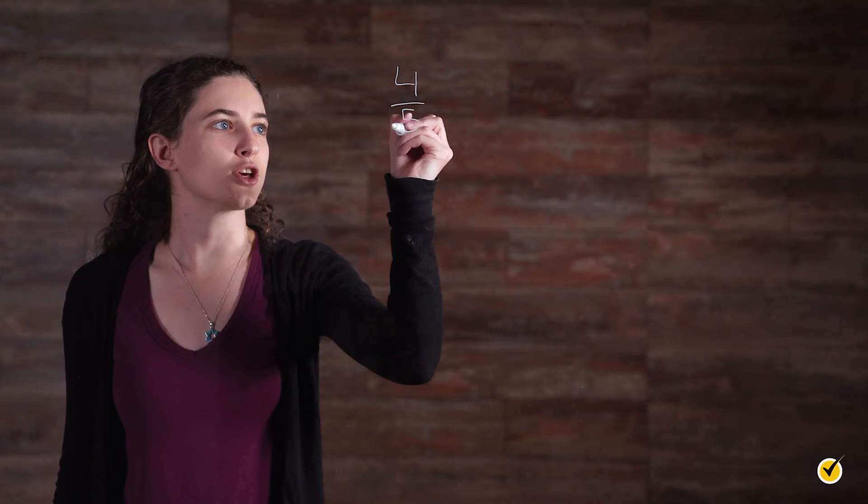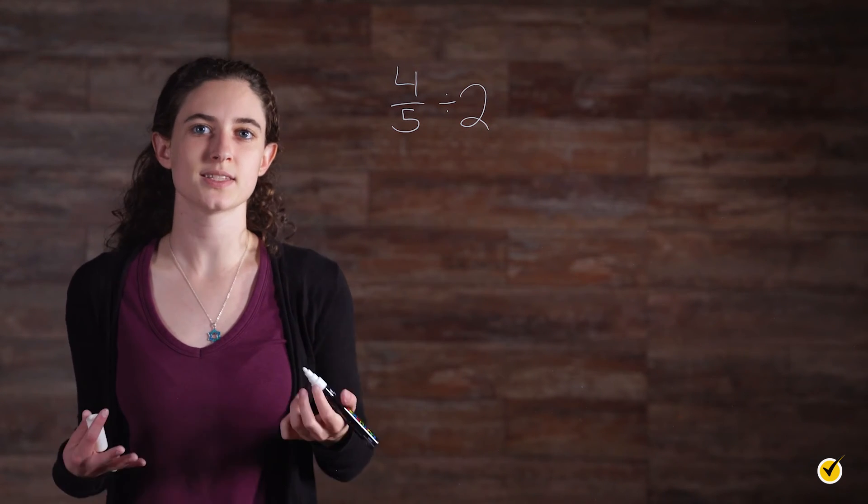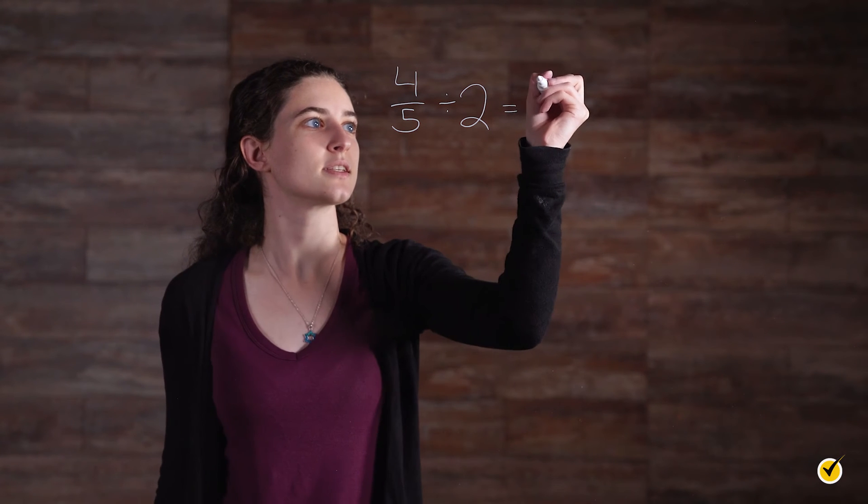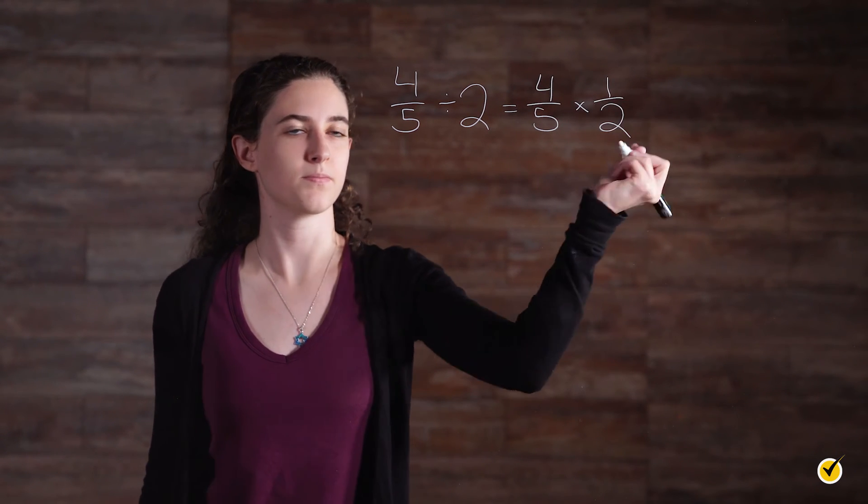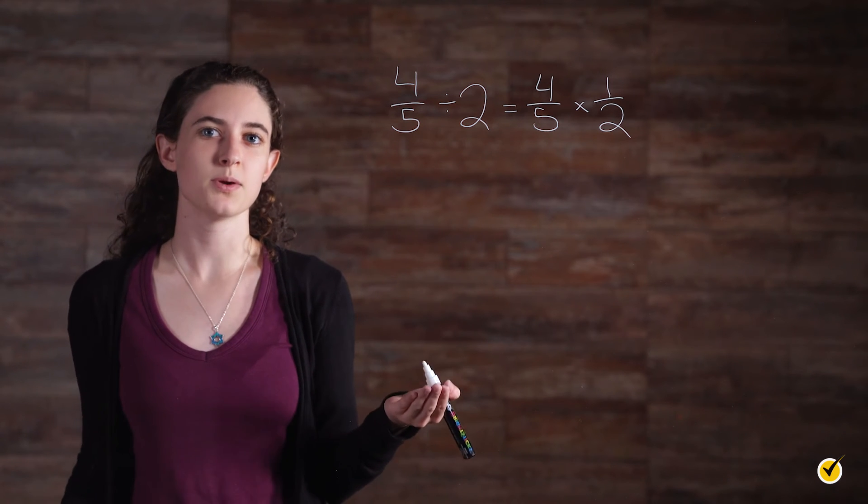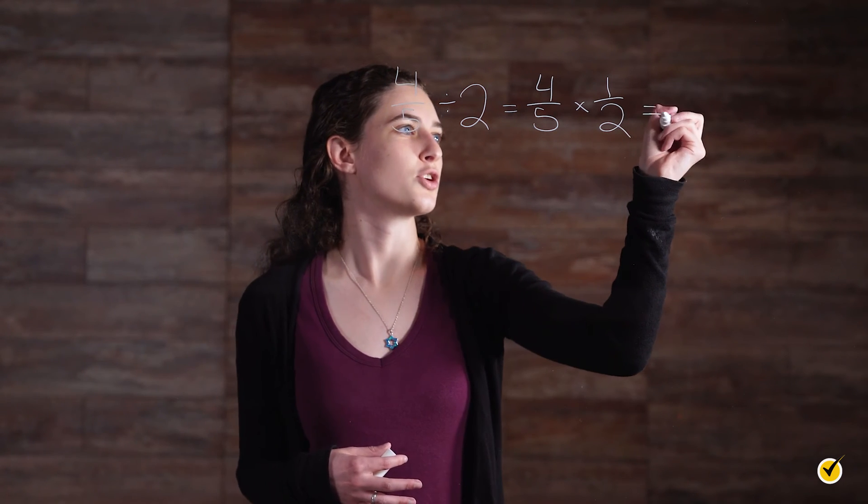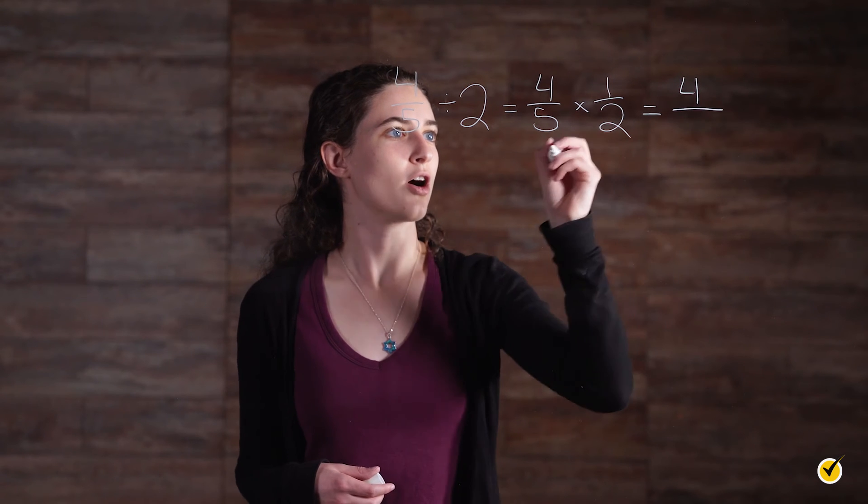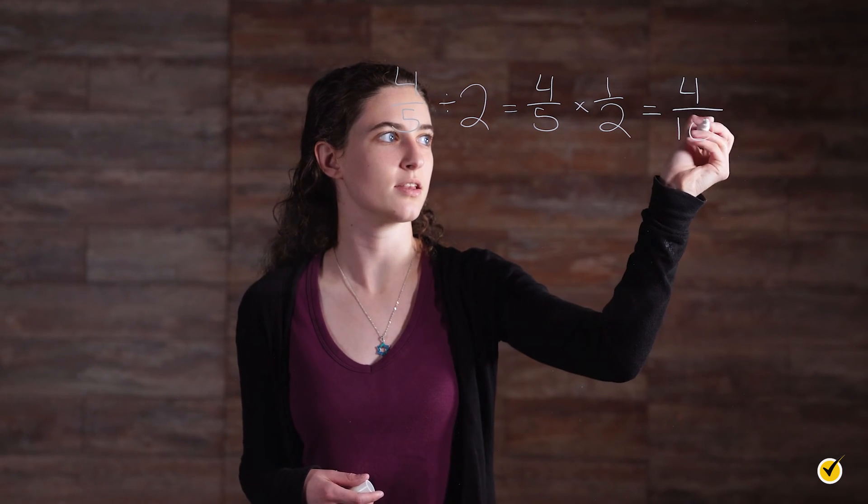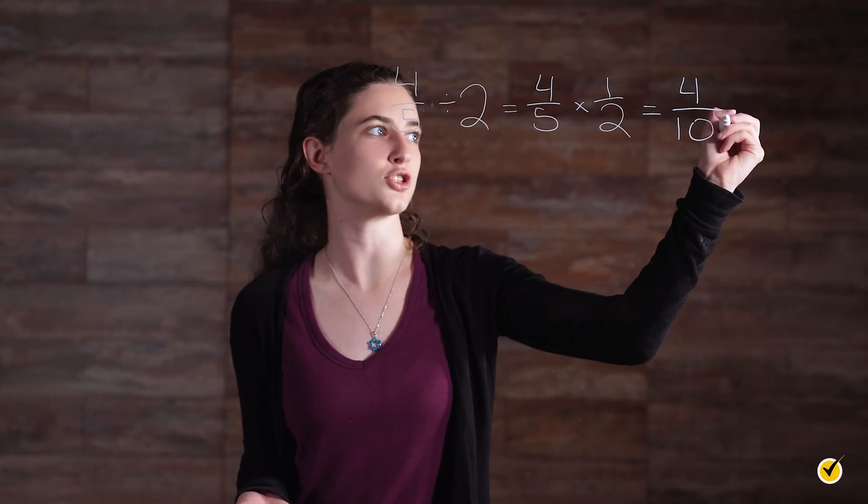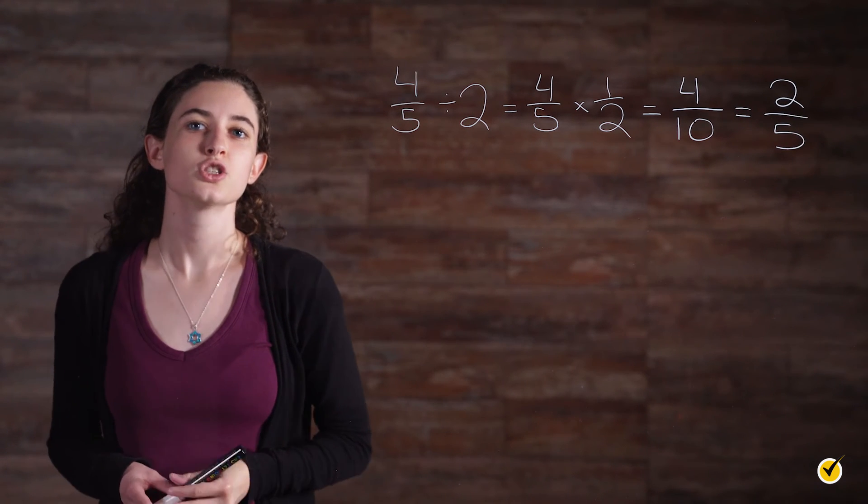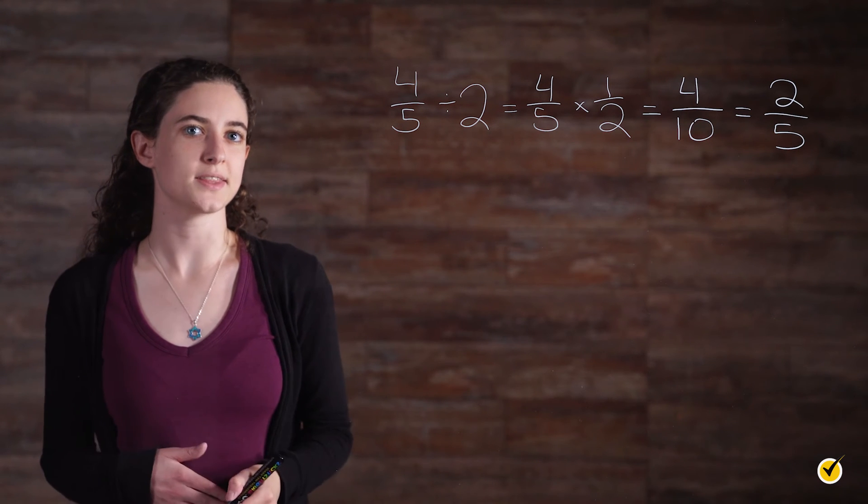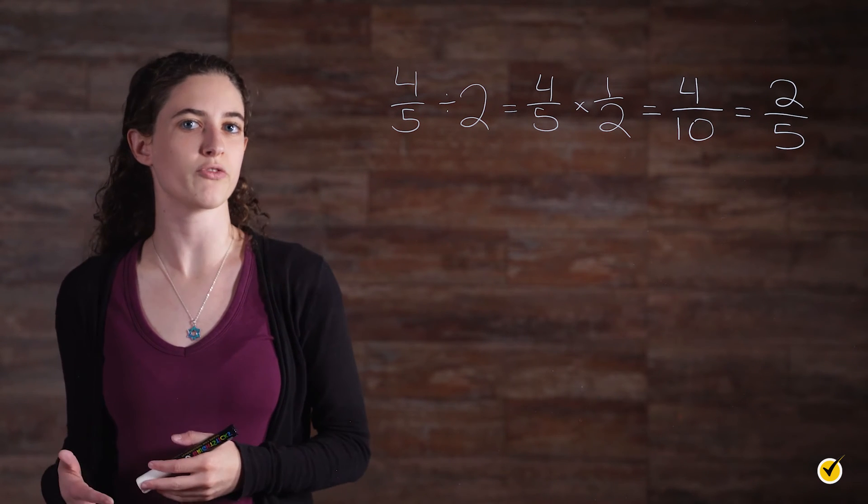So 4 fifths divided by 2 is really the same as saying 4 fifths times 1 half. Then it's going to be multiplied across just like we did before. So we have 4 times 1 is 4, over 5 times 2 is 10, which then simplifies to 2 over 5. So in other words, 2 fifths is half the size of 4 fifths.